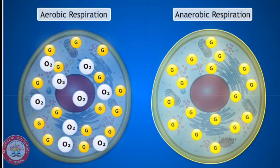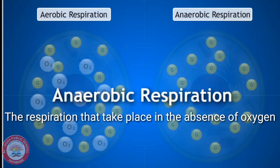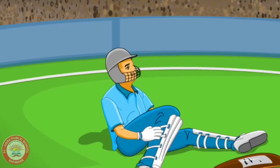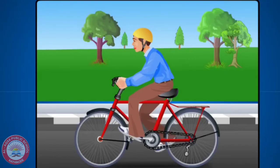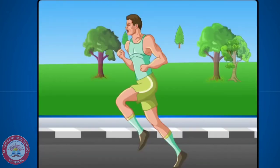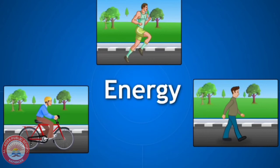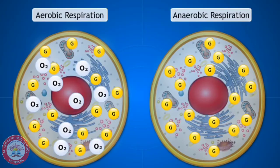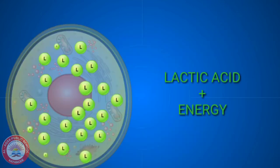The next type of respiration is anaerobic respiration. It is the respiration that takes place in the absence or lack of oxygen. Have you noticed sports persons getting muscle cramps? Muscle cramps usually occur when a person is involved in heavy exercise like cycling, running, speed walking, etc. for a long time. Such exercises need a lot of energy and thus the oxygen in muscle cells will be less. In the absence of oxygen, muscle cells undergo anaerobic respiration and produce energy along with lactic acid.